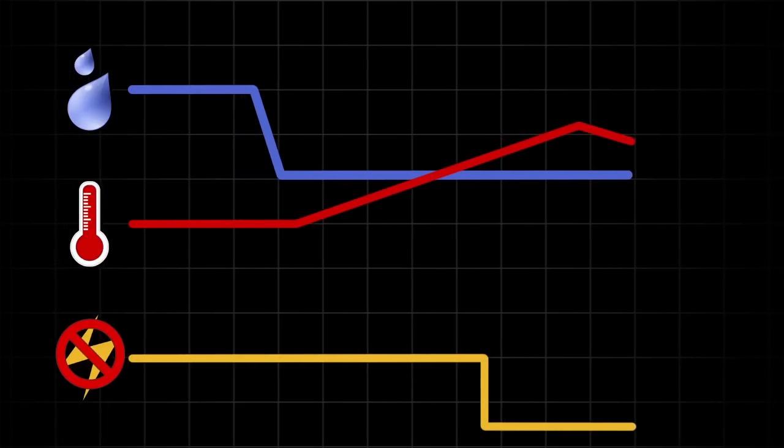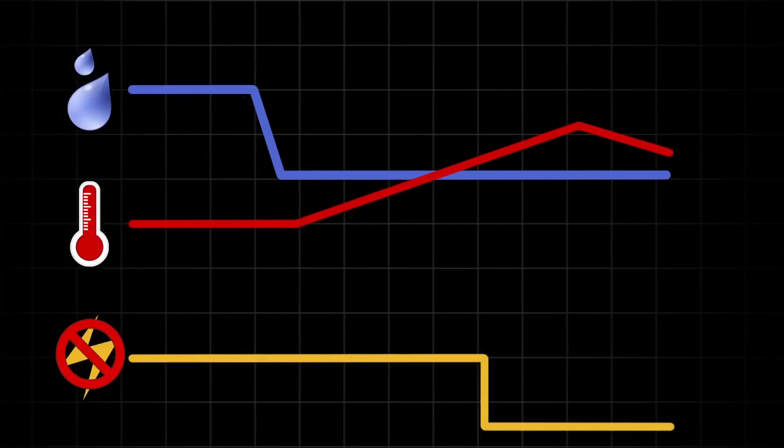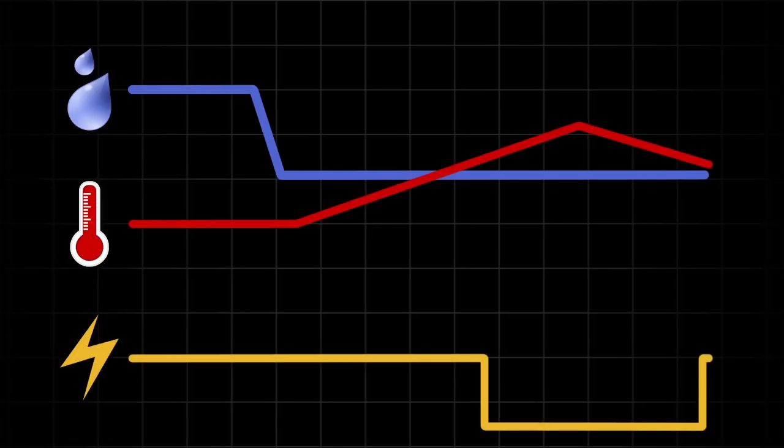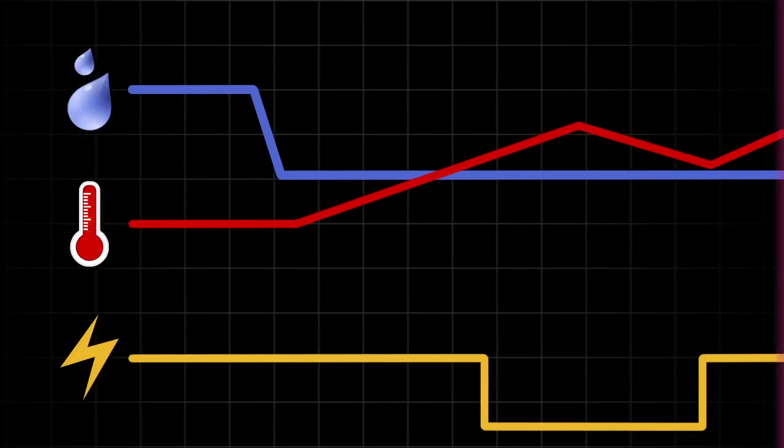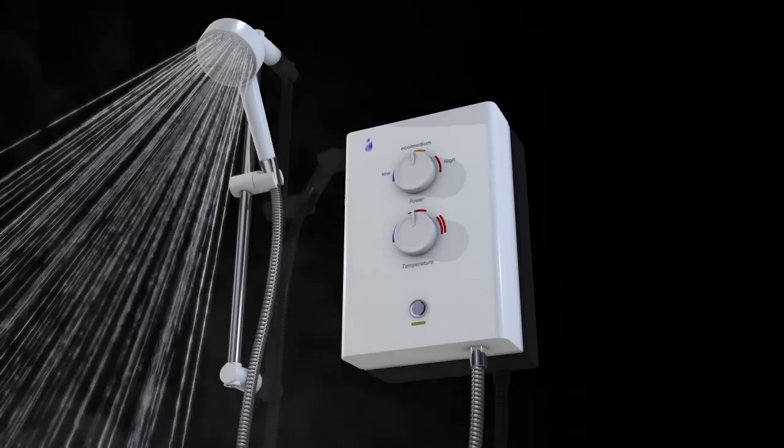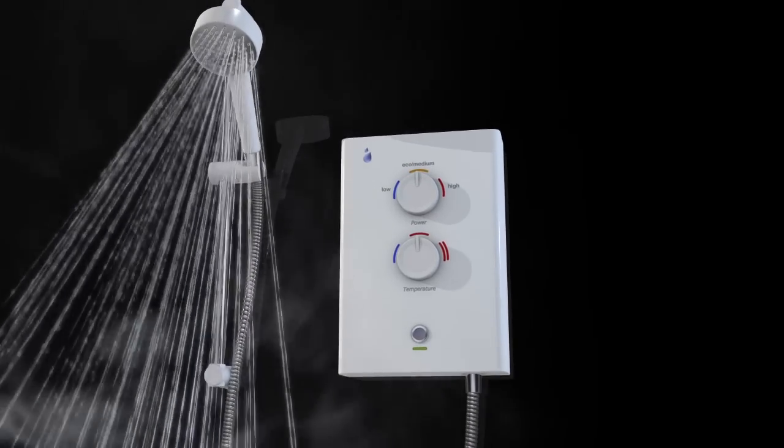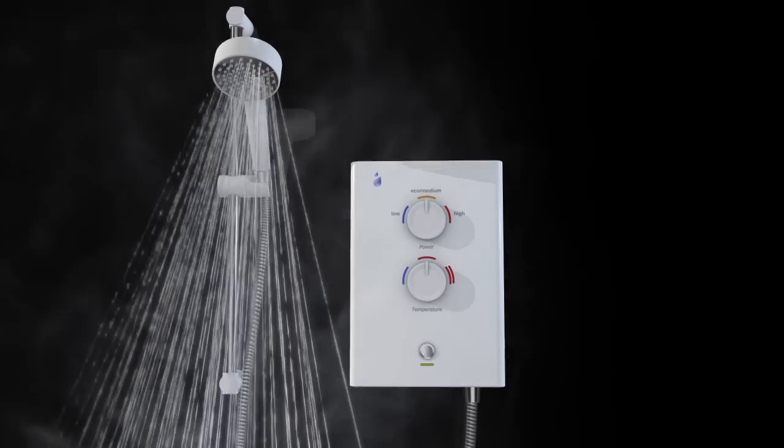Once the water has cooled below this temperature the unit lets the electricity kick back in to reheat the water and the shower will continue to work showering the user in very hot water. This cycle will continue until the blockage is cleared.